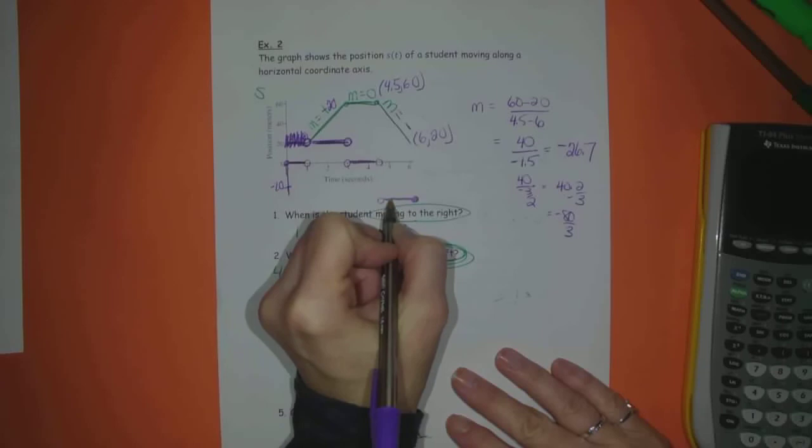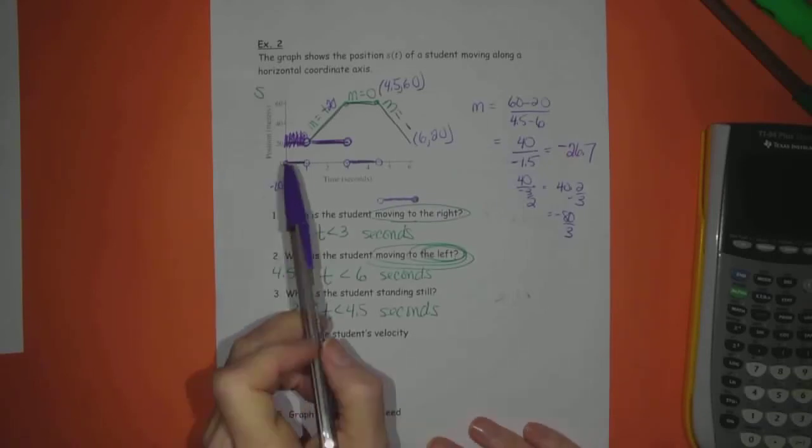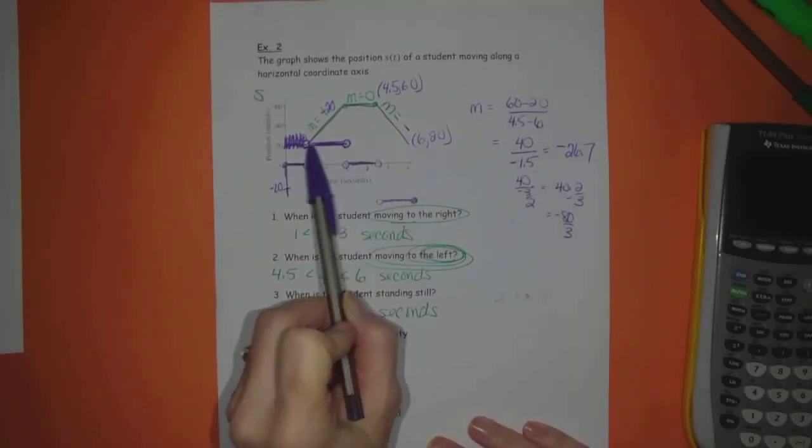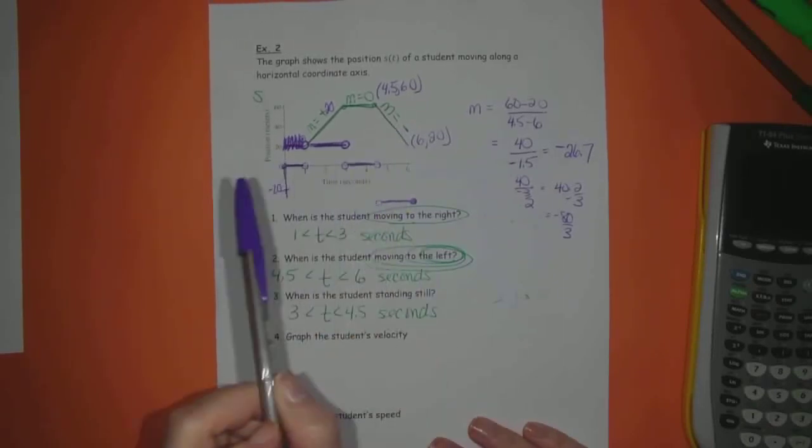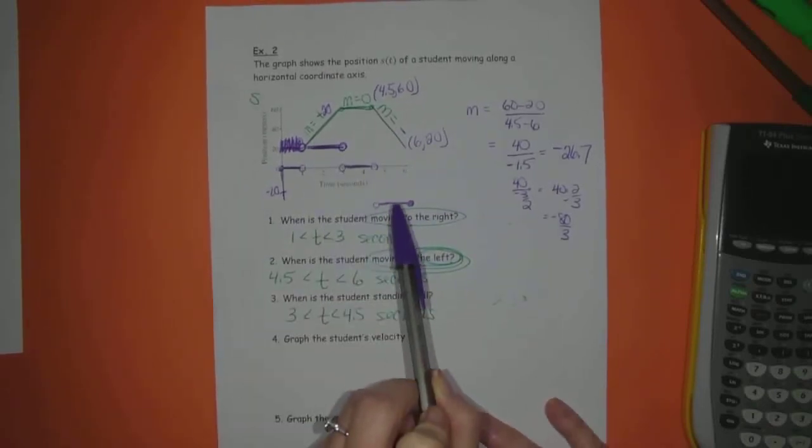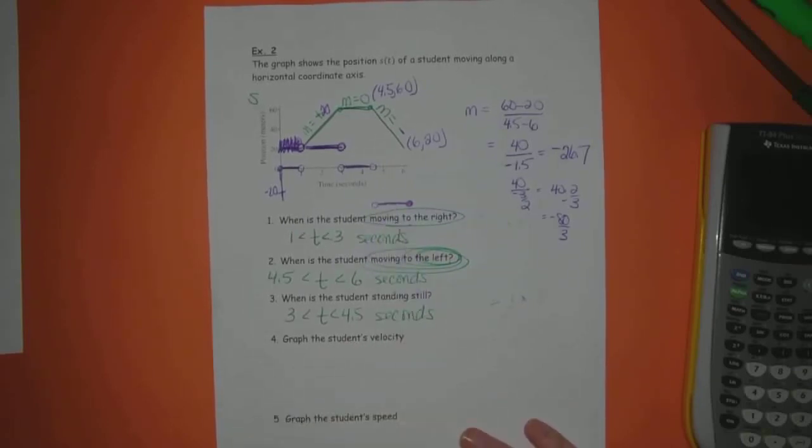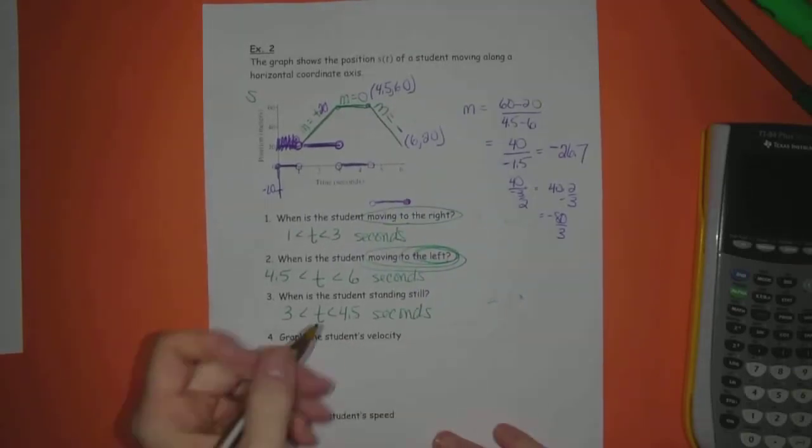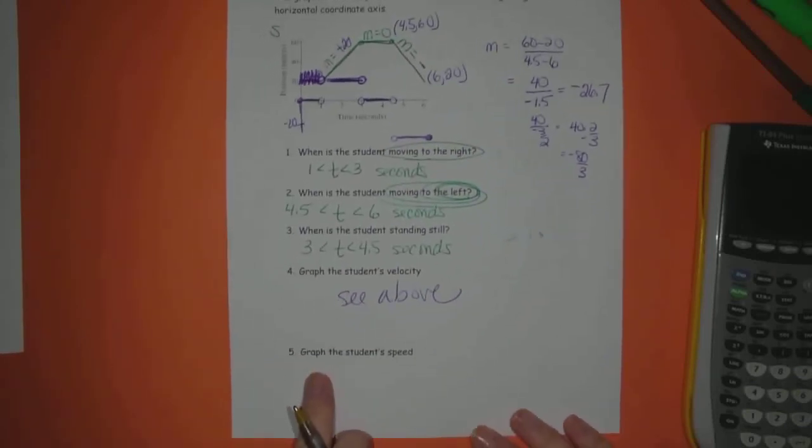Good. So that's the graph of velocity. So you see zero velocity, positive velocity, zero velocity, meaning not moving, not moving, moving in a positive direction. This means I'm moving in a negative direction or leftward direction. So this one's C above. And then number five, graph the student's speed.